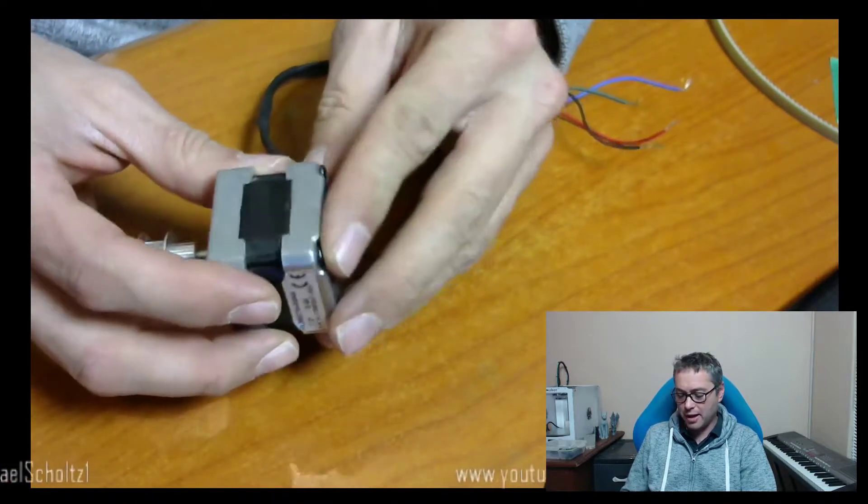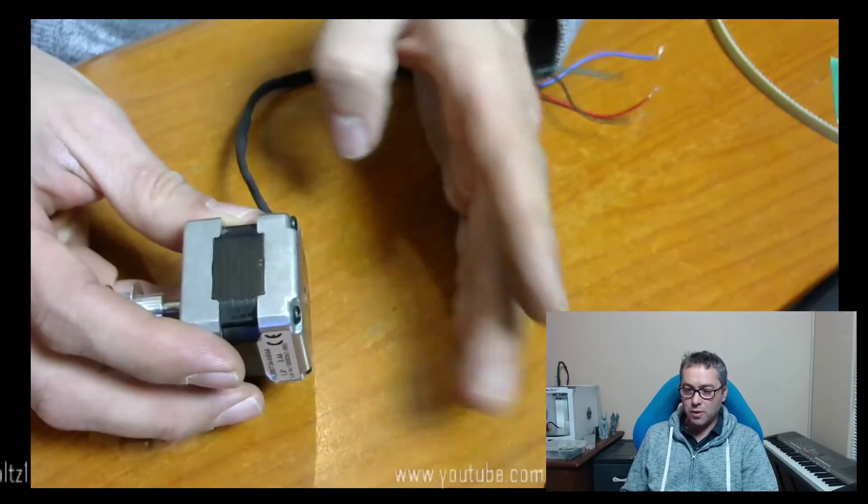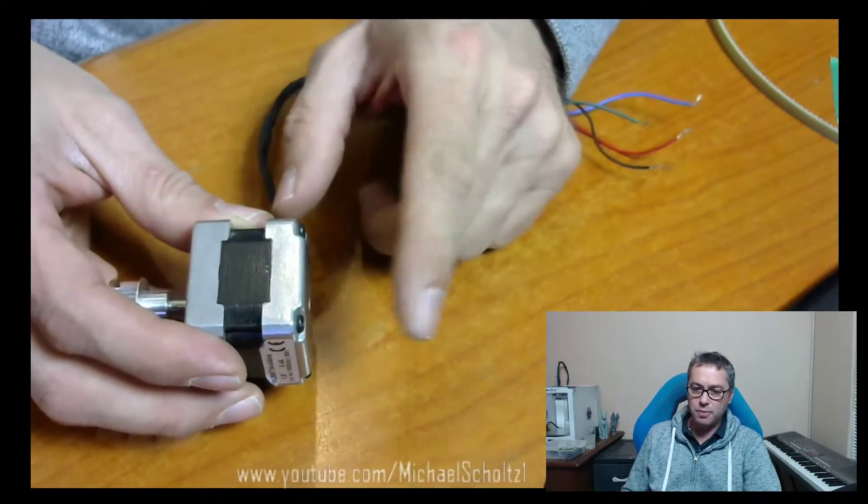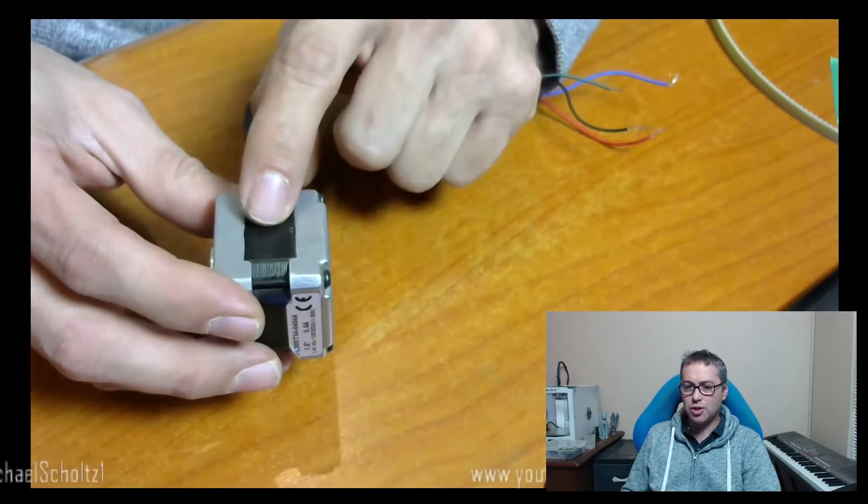But you want to go with the longer ones. I find the sweet spot for me is around 45 millimeters in length. Seems to have good power. The shorter ones you've got to drive quite hard—they get hot and that can actually melt parts in your printer if it's plastic or printed parts in your printer.